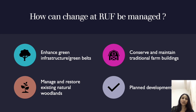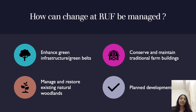We have discussed some of the problems which rural-urban fringe areas are facing; now we will see how we can manage them. First, enhance green infrastructure and green belts. Second, we have to conserve and maintain traditional farm buildings to preserve their traditional characteristics. Next, we have to manage and restore existing natural woodlands, as these areas are a source of natural woodlands. Finally, all development activities should be properly planned.